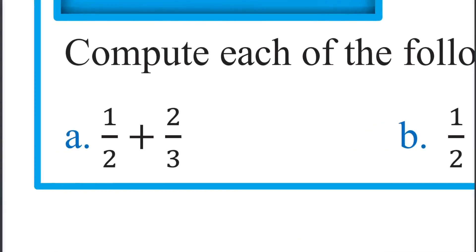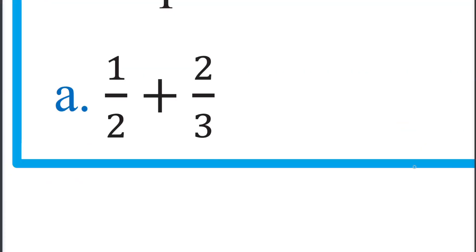For example, 1 over 2 plus 2 over 3. We select 10 as the common denominator, then click — we get 6 over 10.